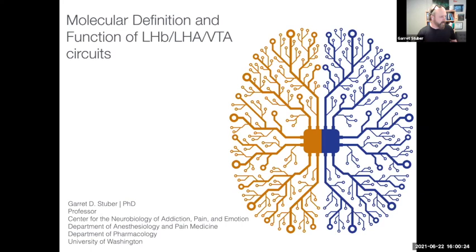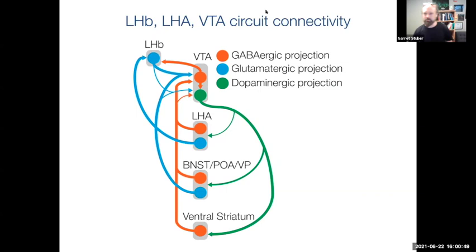Today my talk is going to be a bit of a hodgepodge of a couple different things, but the focus is really going to be on the molecular and functional definition of cell types within the lateral habenula, the lateral hypothalamic area, and their connections to the VTA. This is going to touch upon a lot of the themes we've already heard about in this session.